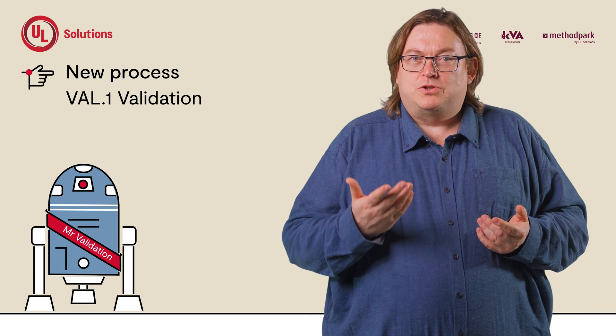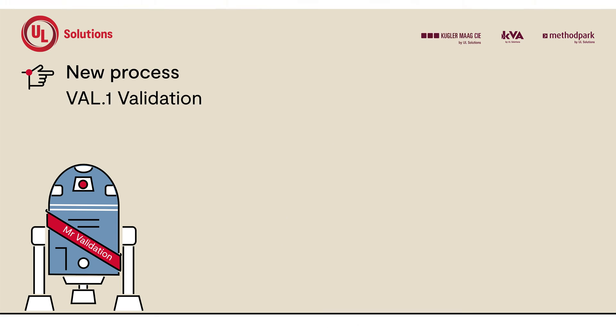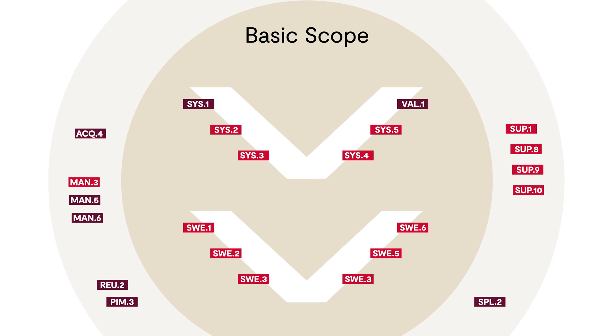A new process has also been added: Validation. This process is a tribute to the new multi-domain approach of ASPICE. At the top of the system integration processes, validation must provide evidence that the final product meets the intended use. Will this make process assessment even more complicated than before? Not necessarily, because the scope of the core processes has been reformulated, although the ASPICE model is more comprehensive than ever before.